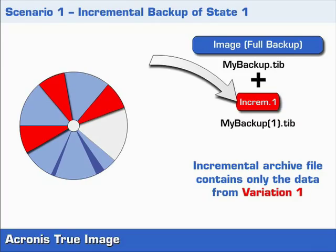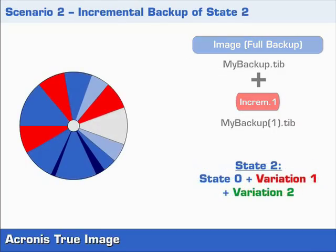We now come to our second scenario where we do a second incremental backup. You will see later that the two backup types only differ from this point onwards. We now have state 2, which constitutes our second incremental backup. Here we have additional partial changes to our partition which are highlighted in green. These changes constitute our second incremental backup, which becomes backup 2.